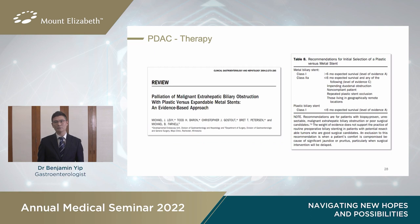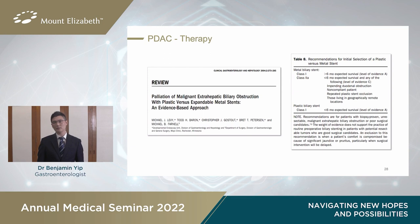In this review by several advanced endoscopy experts, they have suggested that if the patient's survival is going to be more than six months, then a metal stent is preferable, or if you have certain problems like impending biliary obstruction, a non-compliant patient who won't come for repeat ERCP, repeat plastic stent occlusion, or patients living very far away, then you can move straight to a metal stent even if the life expectancy is less than six months. However, if you have a short life expectancy, then one may go for just a plastic biliary stent.